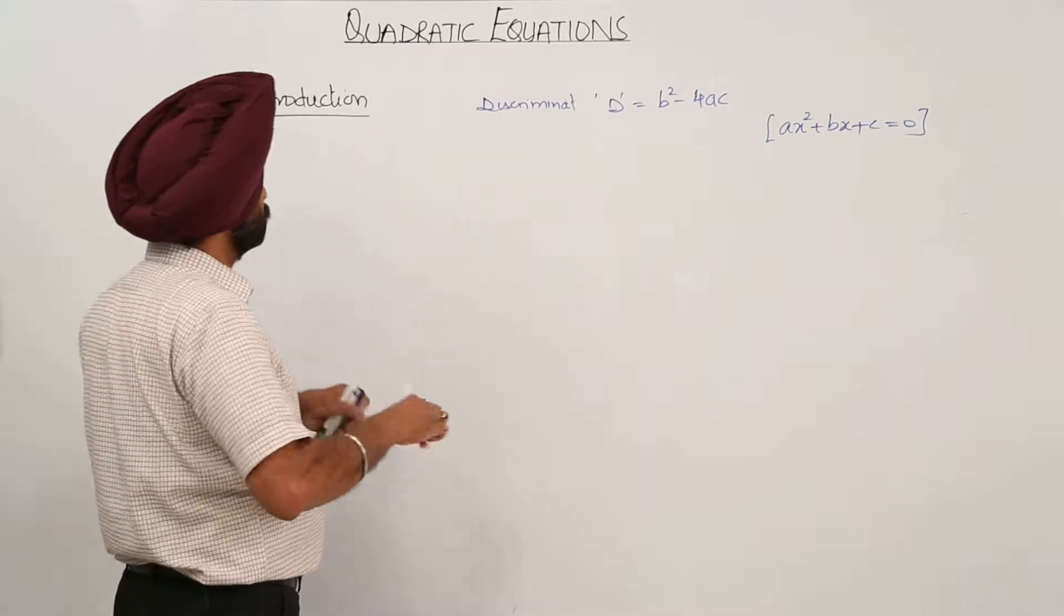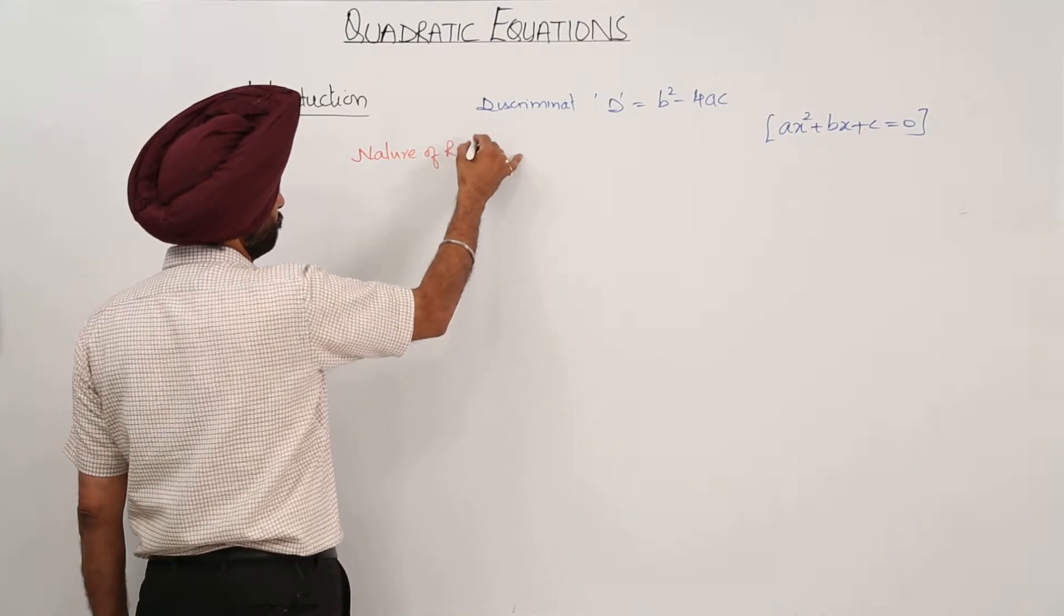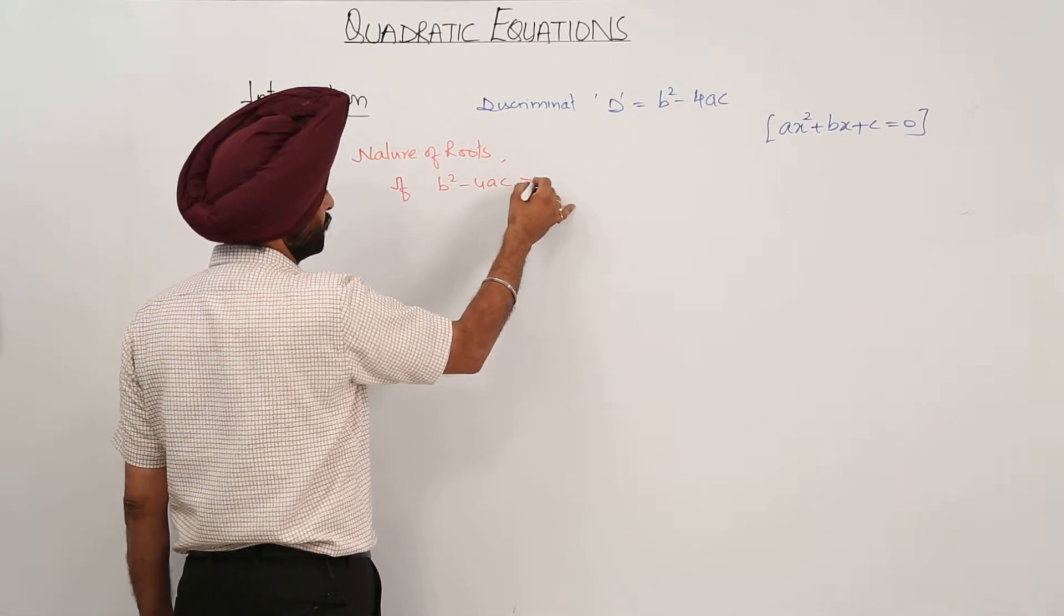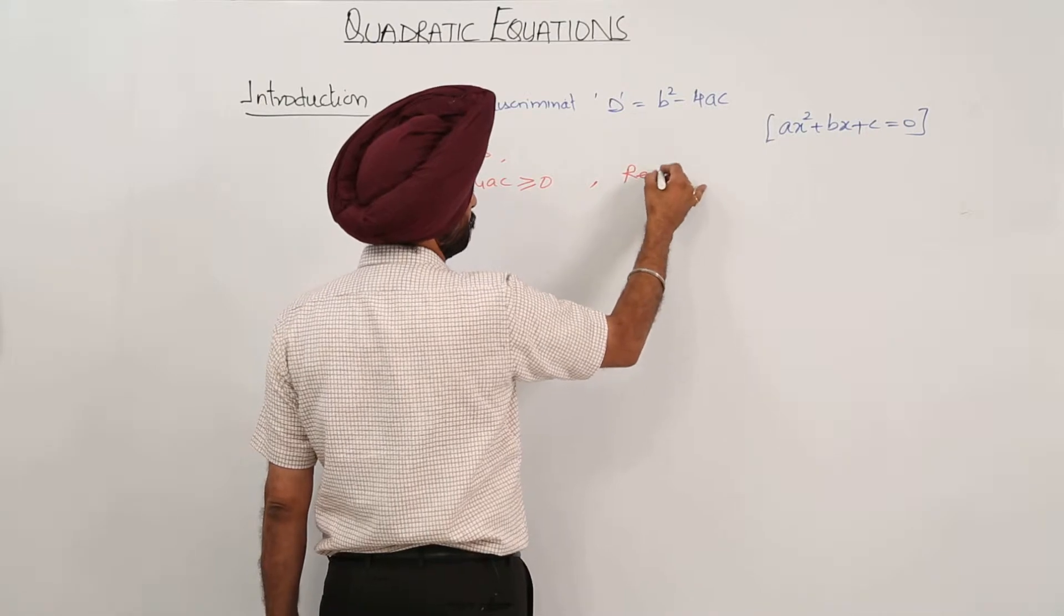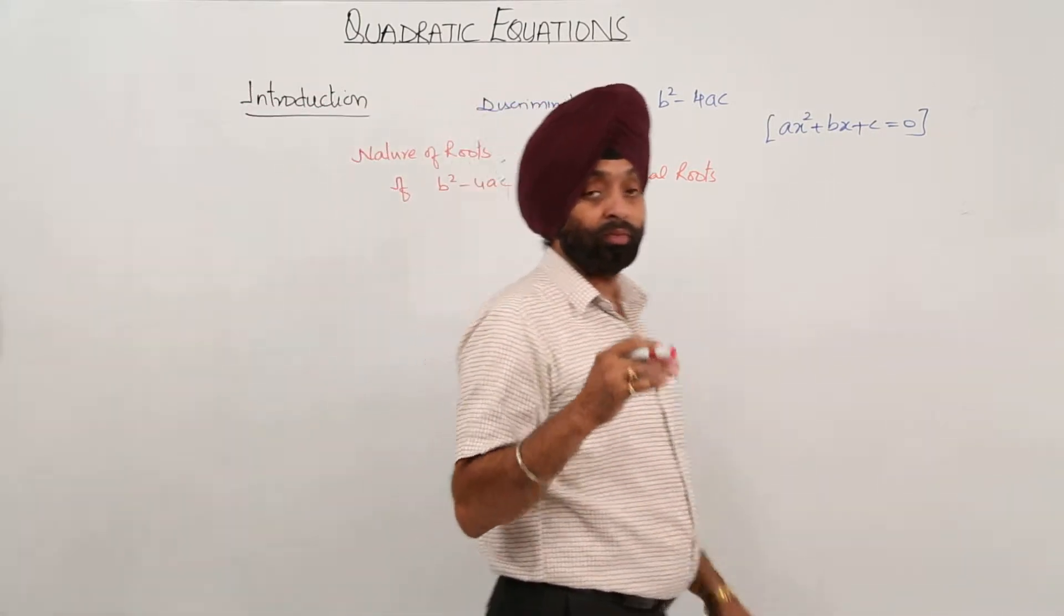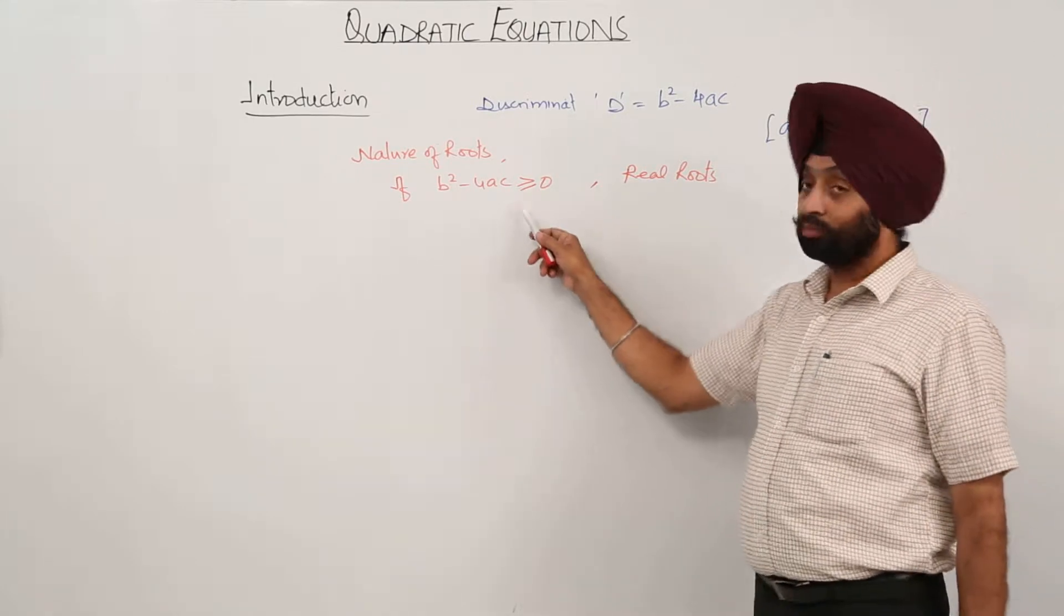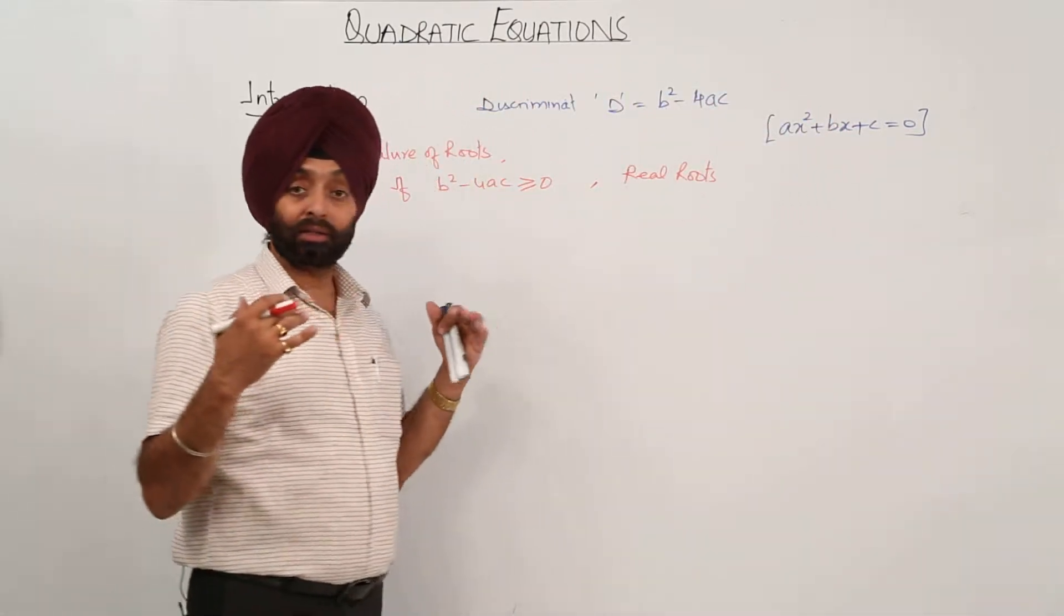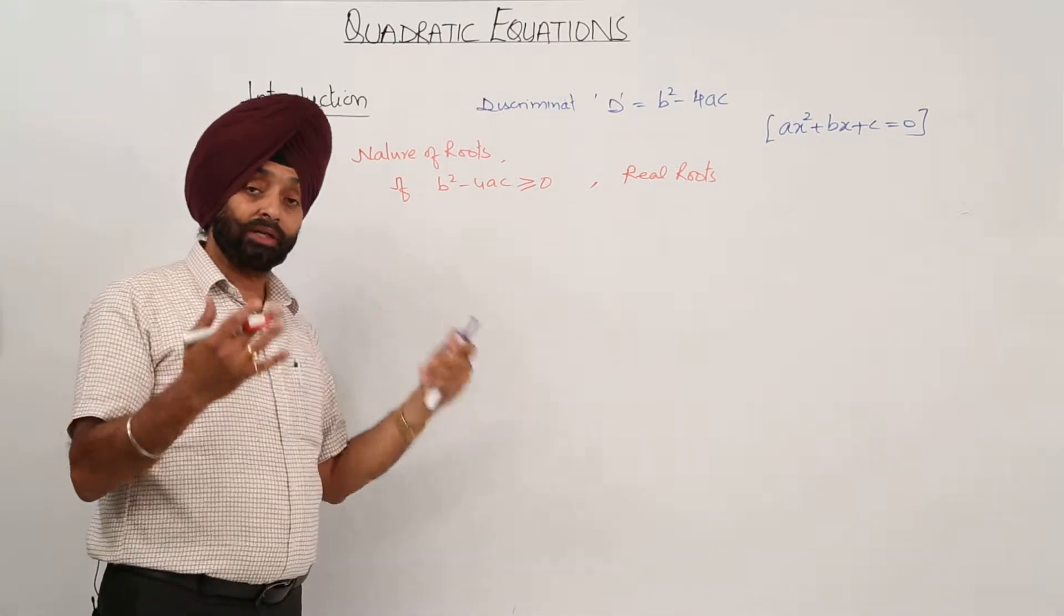Now we have gone for the nature of the roots. Nature of roots we were having: if b square minus 4ac is greater than or equal to 0, we were having real roots. Real roots were also divided into 2 parts. If b square minus 4ac is greater than 0, then we were having real and unequal roots. But roots are 2 only, why? Because degree is 2 here. And if b square minus 4ac was equal to 0, then 2 equal roots. Is it clear?